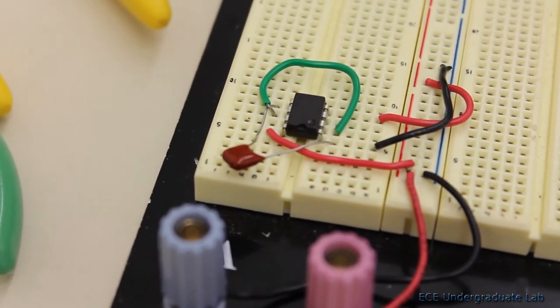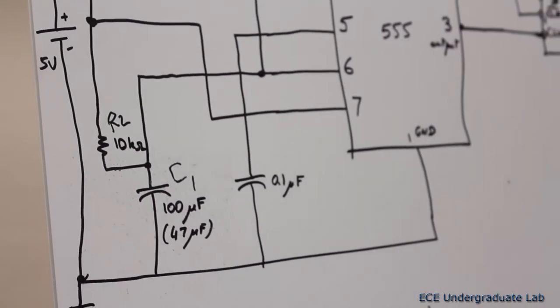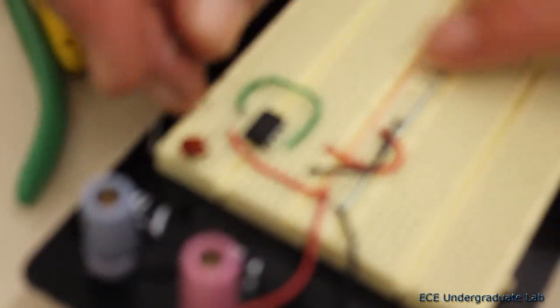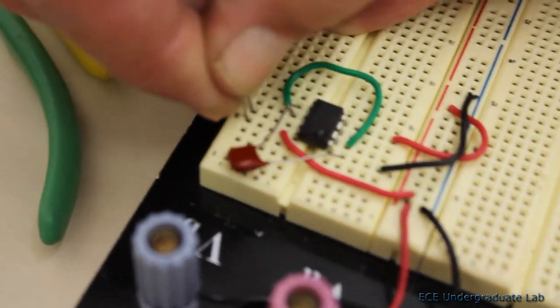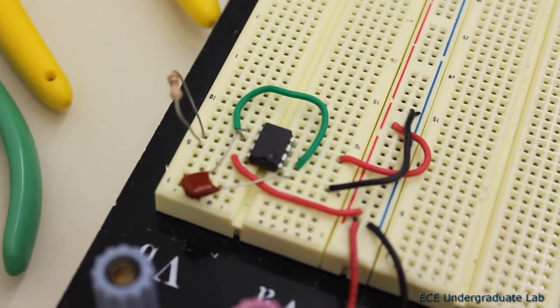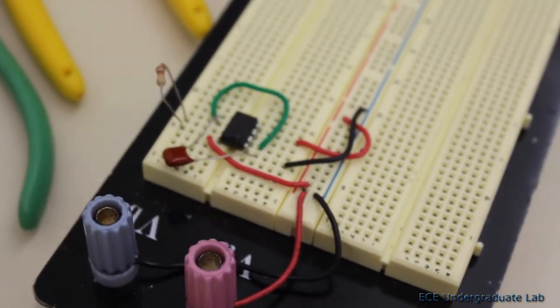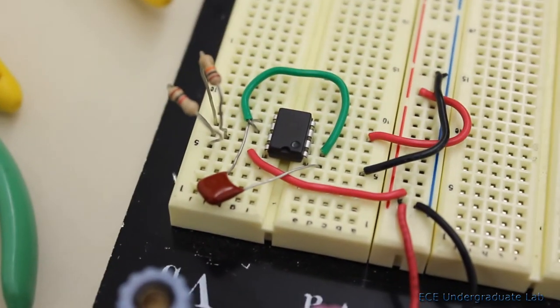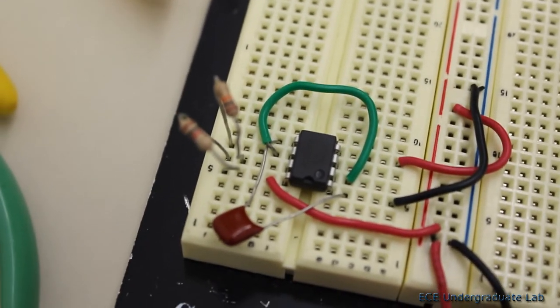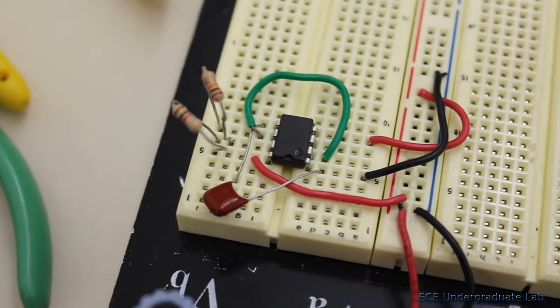The next component would be the 0.1 microfarad from 5 to ground. The 0.1 microfarad is this ceramic capacitor. You take it from pin number 5 and send it all the way to ground. Since pin number 1 is ground, I can also connect it to pin number 1. The next thing is connecting the 2 resistors. I'm going to try to do it the most efficiently way possible without the usage of wires if I could. Here I want the 1 kilohm, which is brown, black, red. That is to be connected from pin number 7 to the power supply. However, since the power supply is also connected to 8, we just need to connect this resistor from pin number 7 to pin number 8.